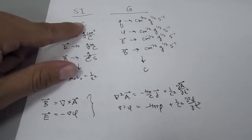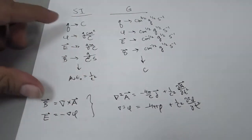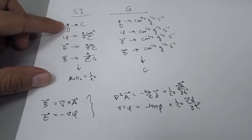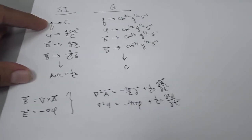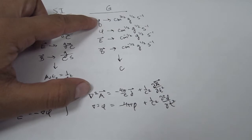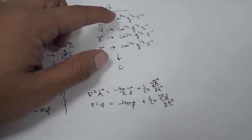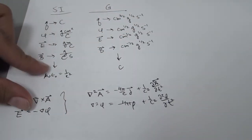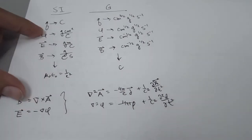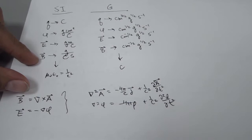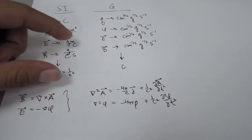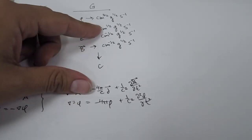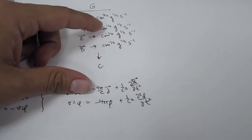The biggest difference between SI and Gaussian units is that charge is an intrinsic quantity with the Coulomb, whereas in Gaussian units the charge is derived from units of length, mass, and time.